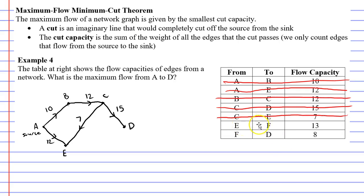Next, I'll go from E to F with a weight of 13. So let's draw F here from E towards F with a weight of 13. I just noticed on my table it actually says flow capacity. So the capacity of each of these edges is the same as saying the weight.